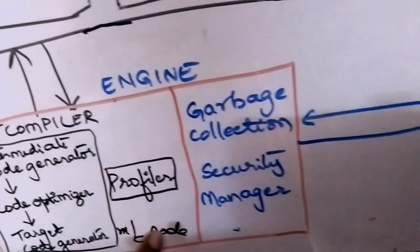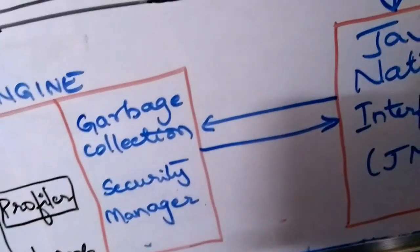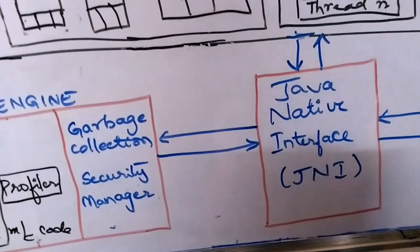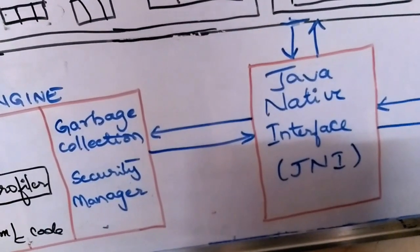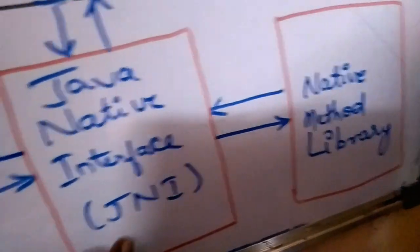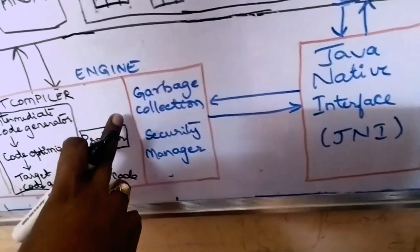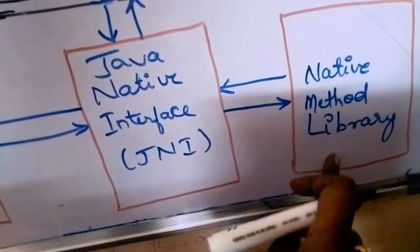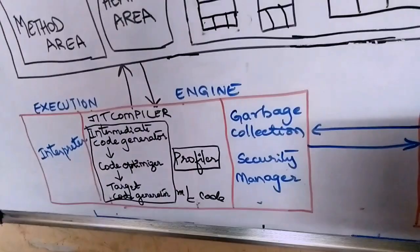Java has automatic garbage collection — unreferenced objects are removed by the JVM rather than by the programmer. The security manager decides what resources a class can access. There is also the Java Native Interface (JNI): if during execution the JVM requires any native methods, it requests JNI to get those methods and provide them to the execution engine.